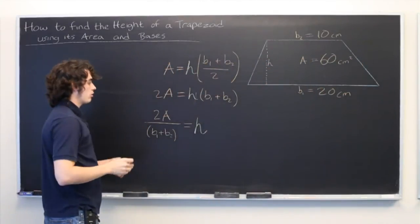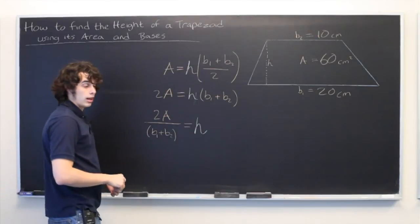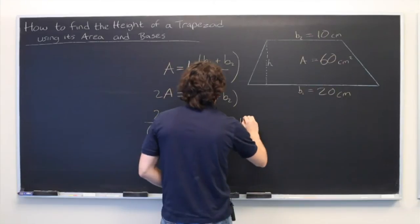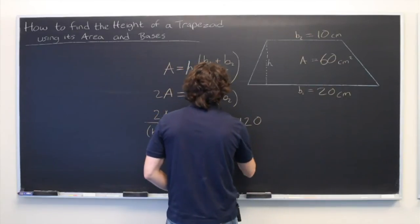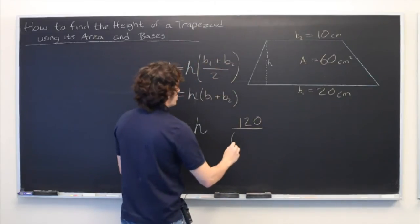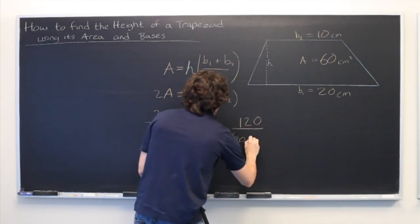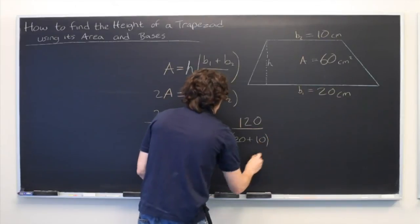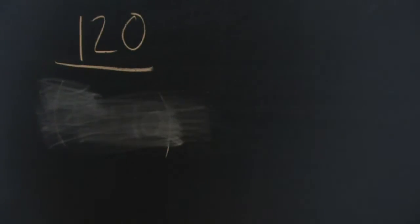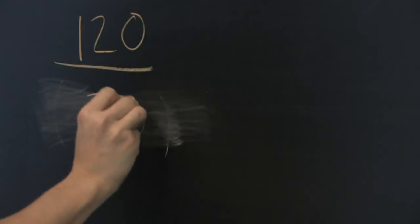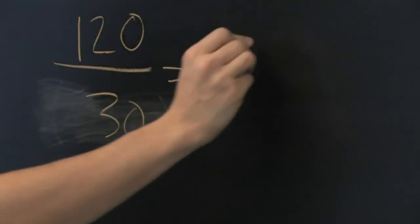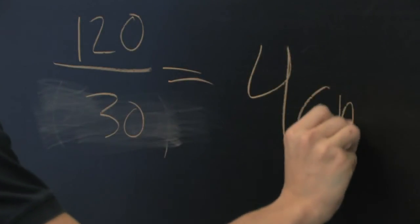Well then we can simply plug those numbers into our formula and see what we get for H. So we have 2A on top, that becomes 120 over B1 plus B2, that's 20 plus 10, or more simply 30. And when you divide that out, the answer is 4 centimeters for our height.